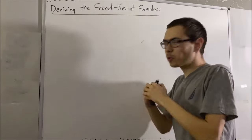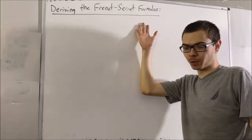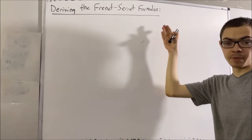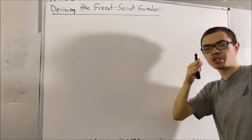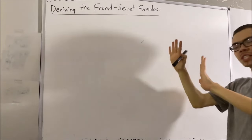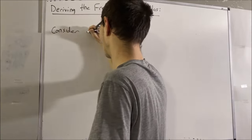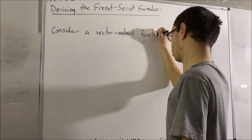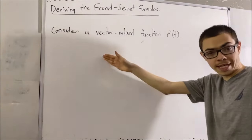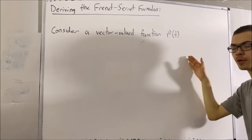Hello! In this video, we are going to derive the Frenet-Serret formulas. This involves TNB frames, and I would like to remind you what the TNB frames are. Consider some vector-valued function. The TNB frames are unit tangent, unit normal, and unit binormal.